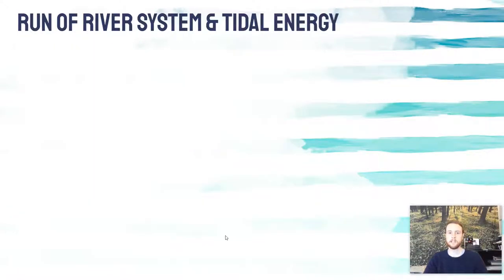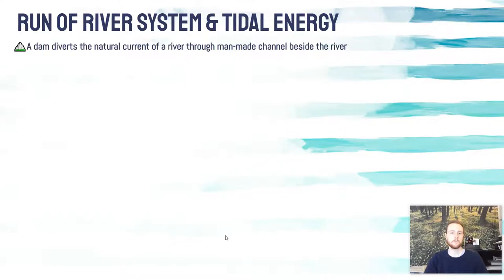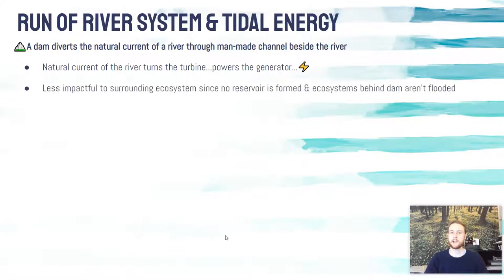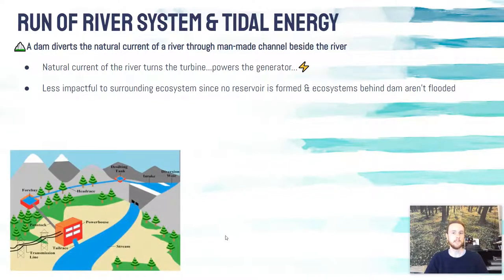Next, we'll talk about a less common system: run of river systems and tidal energy. In a run of river system, we have a smaller dam, and instead of creating a huge reservoir, it just diverts water through a man-made channel that runs parallel to the river. In that channel, there will be a turbine spun by the natural current of the river, which powers a generator to make electricity. It's less impactful on the surrounding ecosystem because you don't flood the area behind the dam, and you allow the natural movement of sediments downstream.